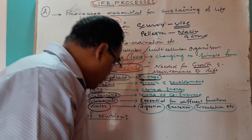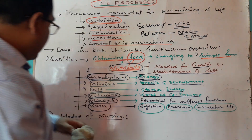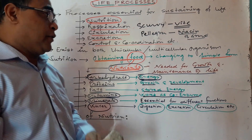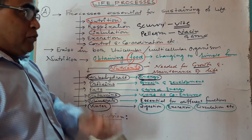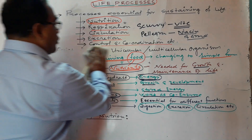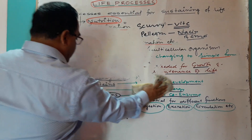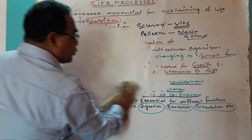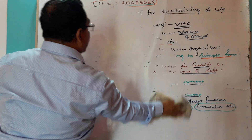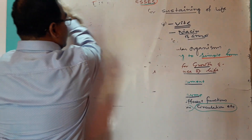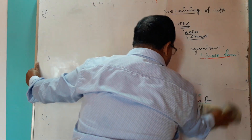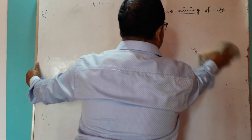Now we are going to discuss about the modes of nutrition. Different organisms obtain food by different ways. The modes of nutrition — types of nutrition — are different.